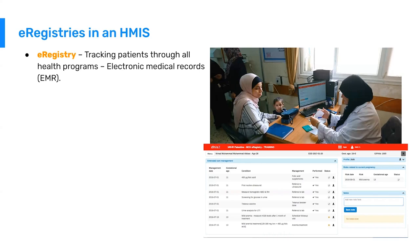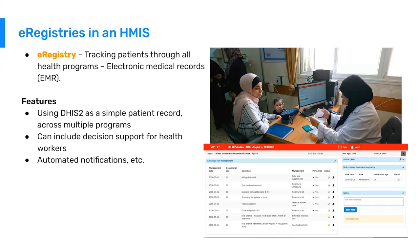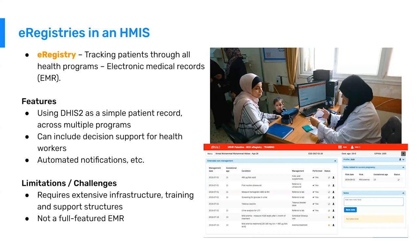DHIS-2 can be used as a simple patient registry across multiple programs, and it can include decision support for health workers. As they're entering data, it can flag and alert things — for example, BMI outside the acceptable range — with different kinds of alerts and notifications depending upon the health program being monitored.